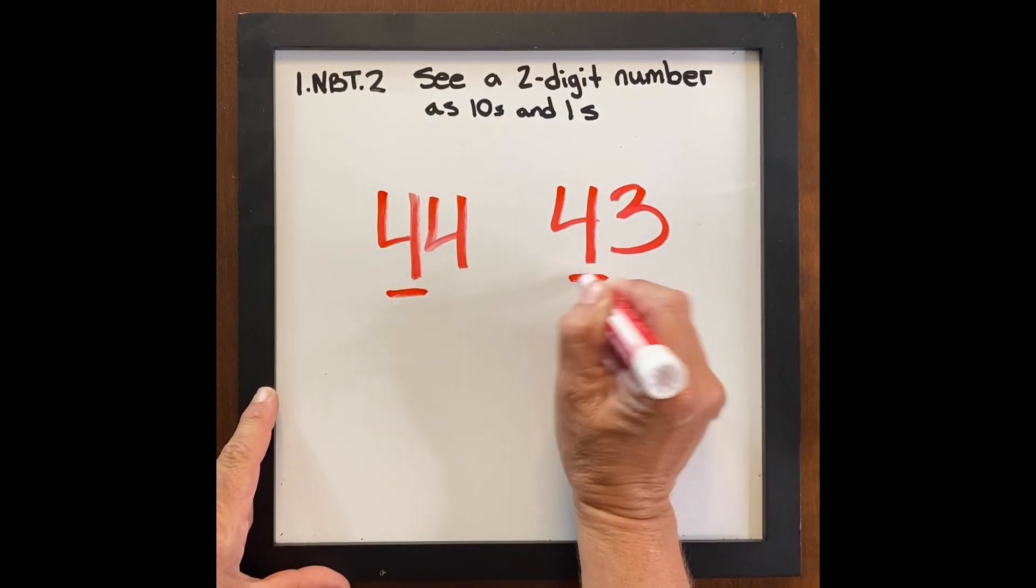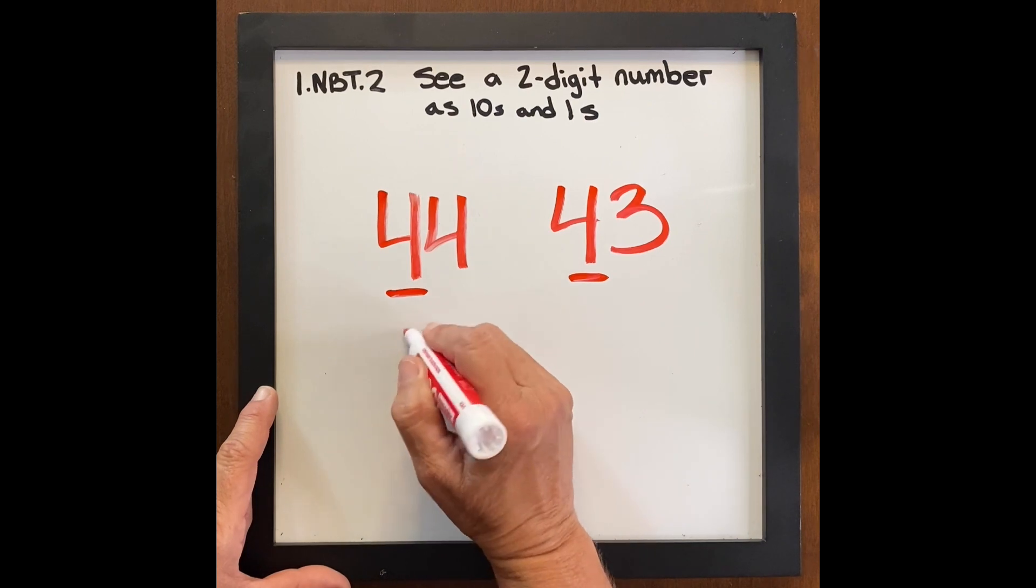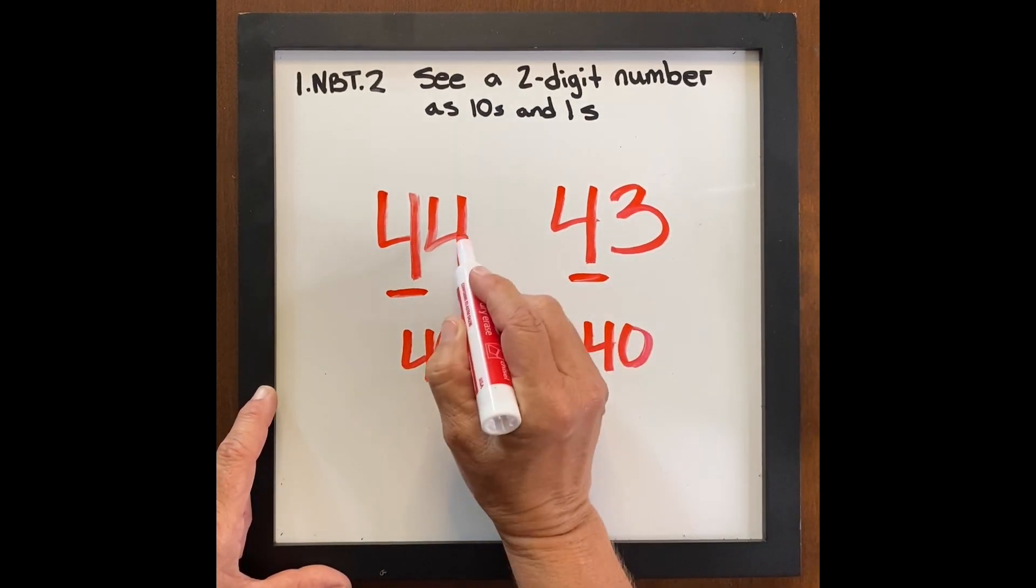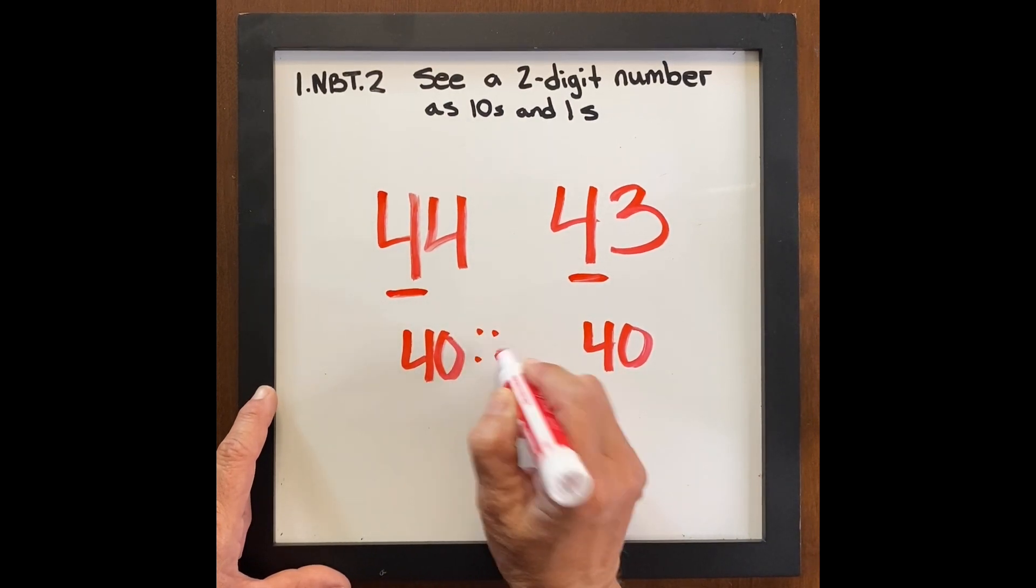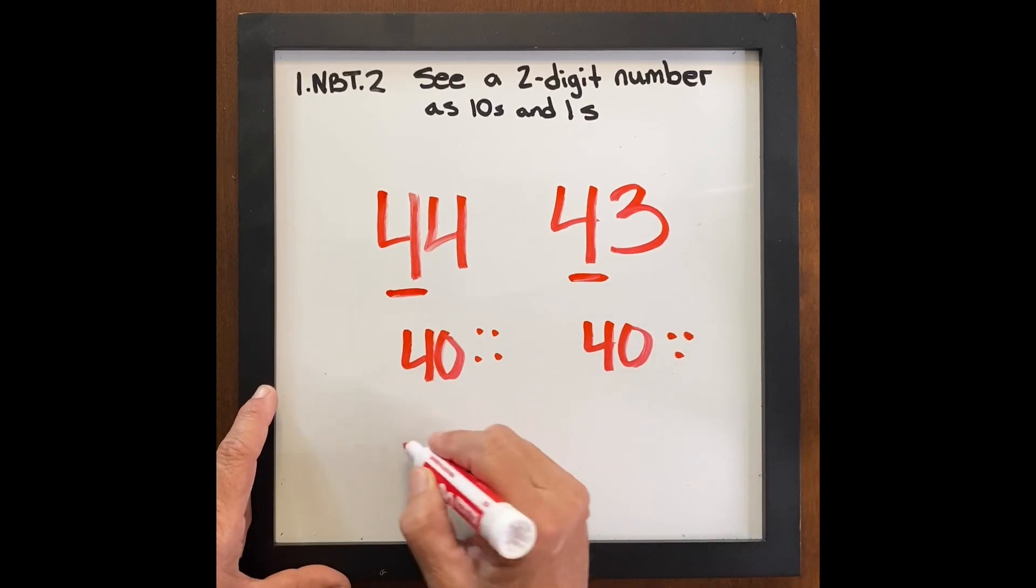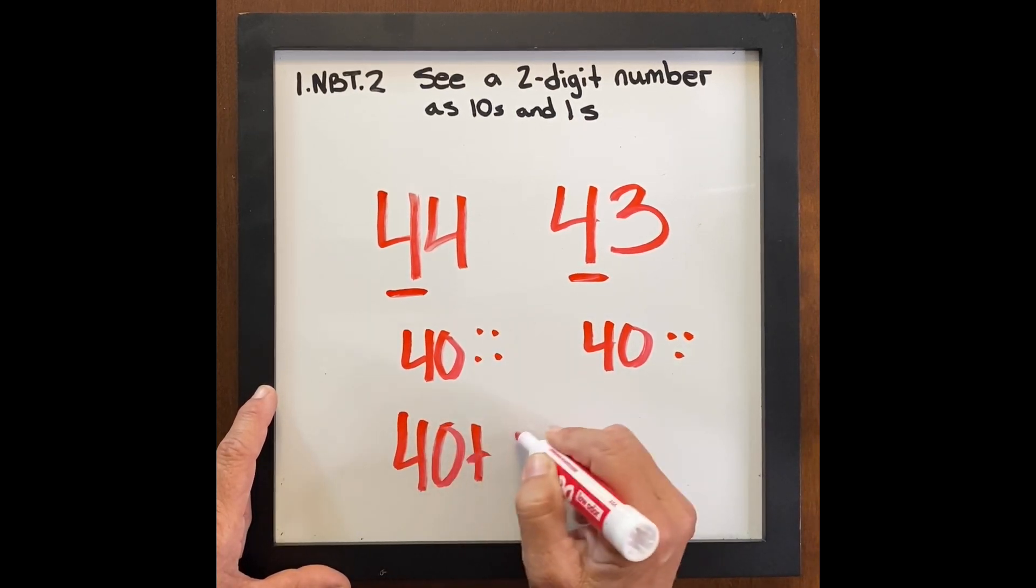Here we have the same number of tens. We have four tens. Another way to write four tens is 40. And here we have four ones. We can show four ones, we can show three ones, or we can show it in expanded form.